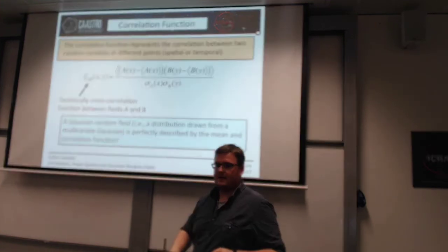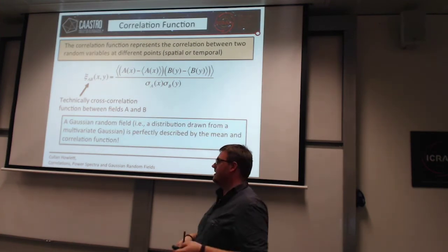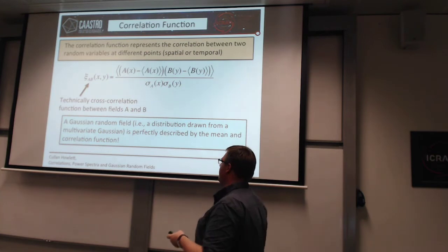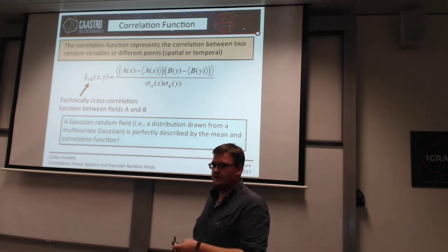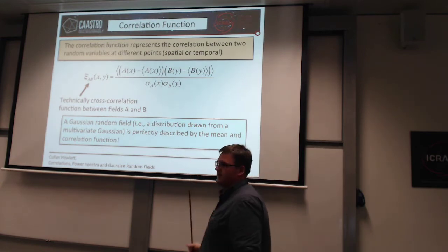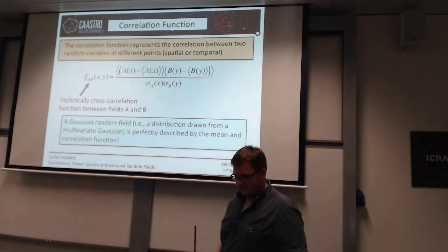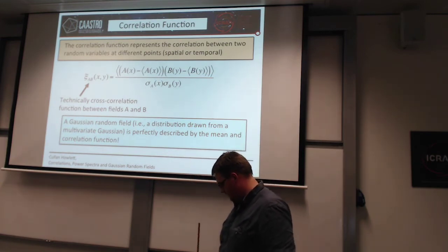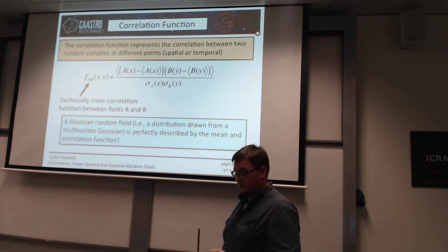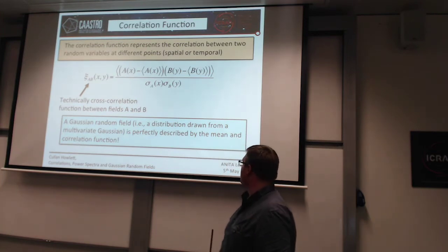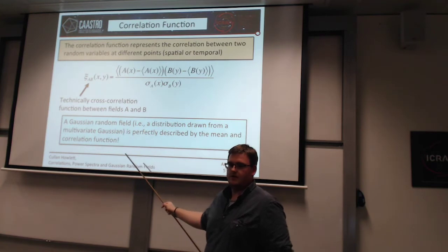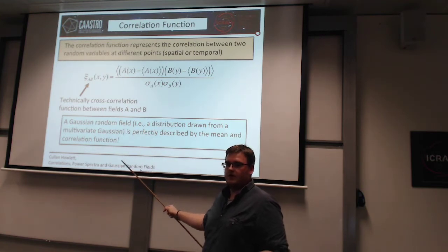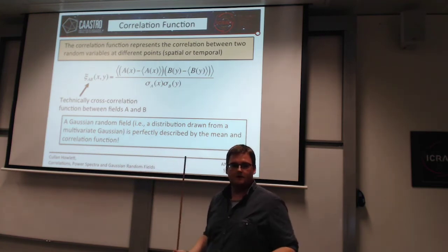In the same way that a Gaussian random field is completely described by its mean and its covariance, it can also be completely described by the correlation function. This is why we might want to measure the correlation function: if we know it, and we know the mean of our field, then we can perfectly describe the distribution of that field.